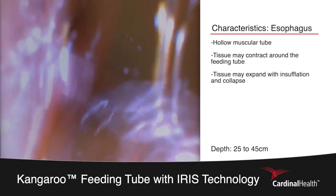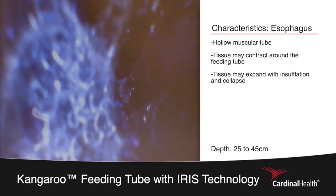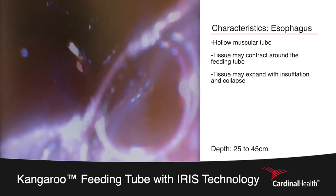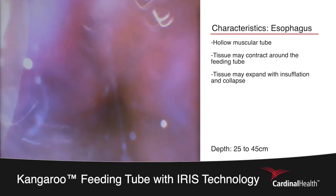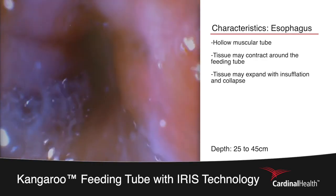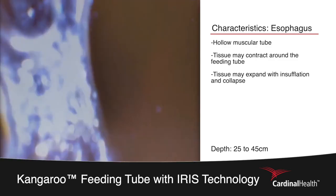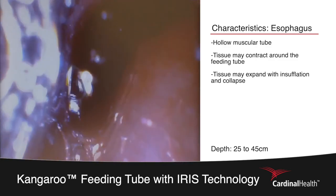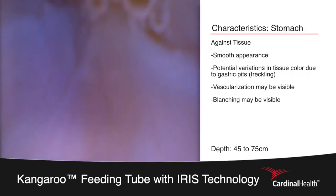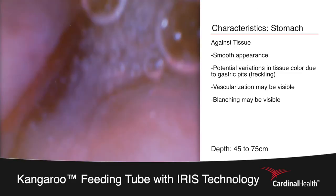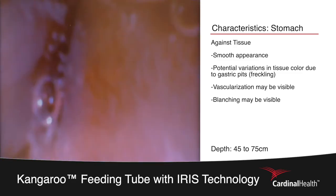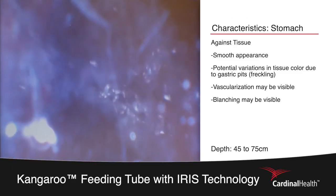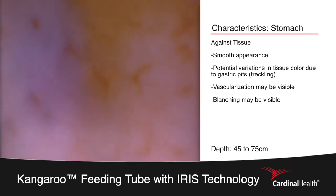In an attempt to reposition the tube, the placer has retracted the tube back into the esophagus, where we can see the lower esophageal sphincter. You can also visualize the esophagus collapse around the tip of the feeding tube before we progress back down into the stomach. The placer has entered back into the stomach as can be seen by the freckling appearance of the gastric pits.